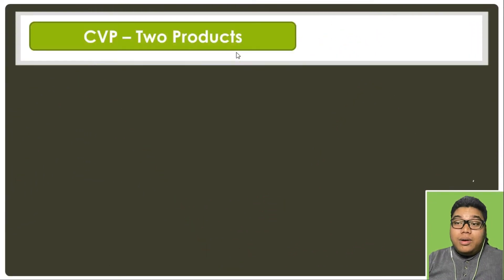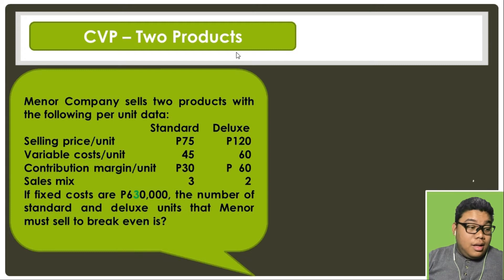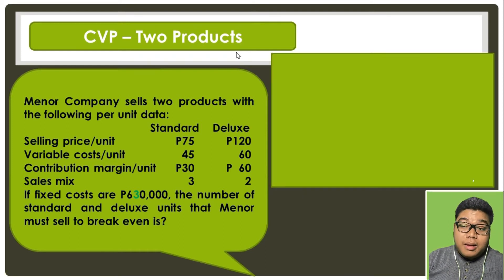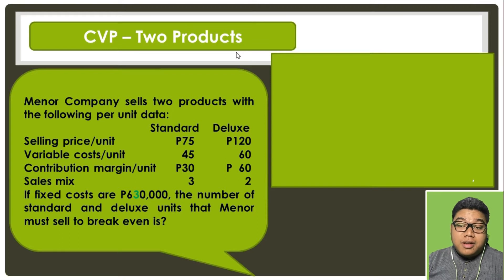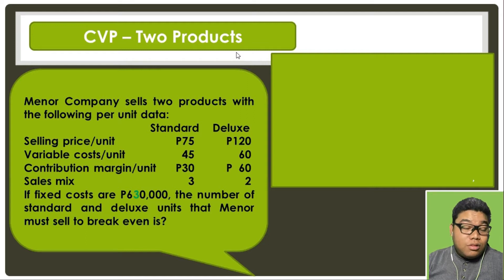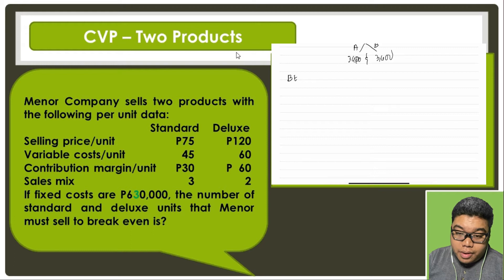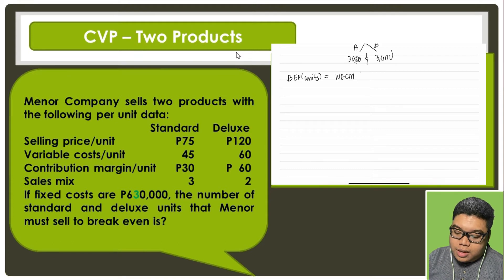Now let's go to our next problem, which has the same nature as our previous problem. Menor Company sells two products with the following per unit data: selling price per unit, variable cost per unit, contribution margin per unit, and sales mix. If fixed costs are 630,000, the number of standard and deluxe units that Menor must sell to break even is how many units? We need to compute for the break-even point in units.